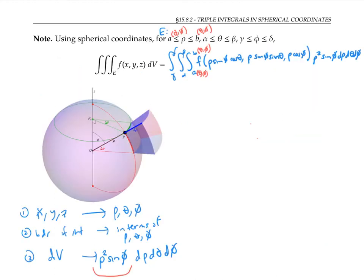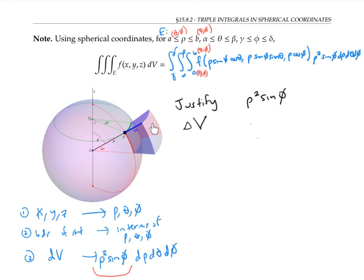Now I want to justify where the factor of rho squared sine phi comes from when integrating in spherical coordinates. We said that dV is not just d rho d theta d phi, but rho squared sine phi d rho d theta d phi. To understand this, let's look at a tiny spherical box. The top and bottom faces are given by different values of rho differing by delta rho — so the blue line segment has length delta rho. The left and right sides differ by angle delta phi, and the front and back faces differ by angle delta theta.